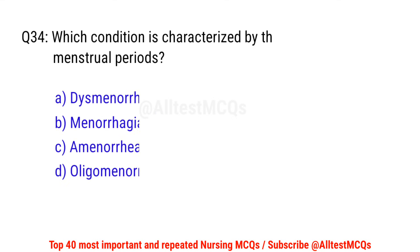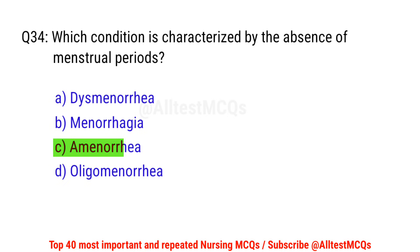Question No. 34: Which condition is characterized by the absence of menstrual periods? The right option is C: Amenorrhea.